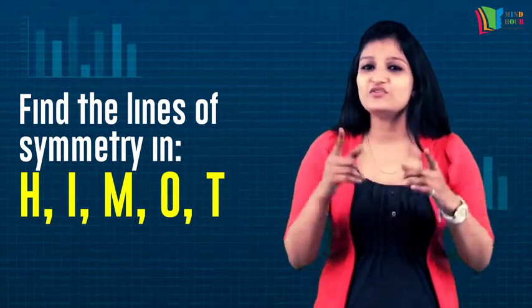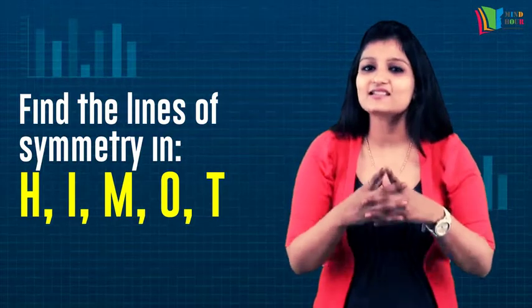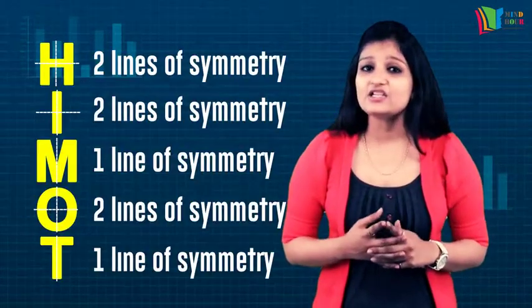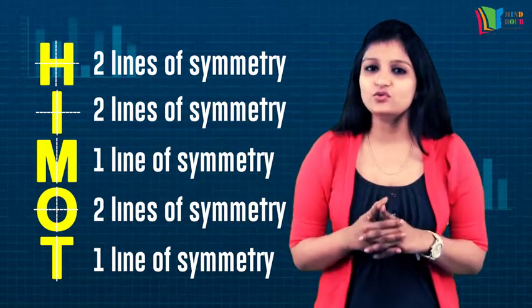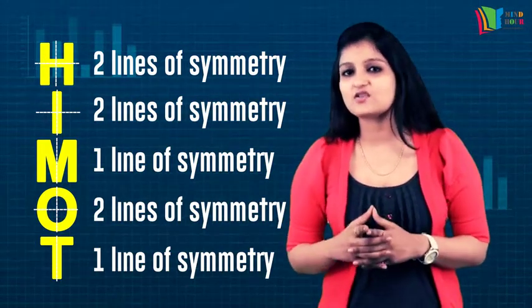Let's check how accurately you found the lines of symmetry for the asked alphabets. H has two: one vertical and one horizontal. I has two: one vertical and one horizontal as well.